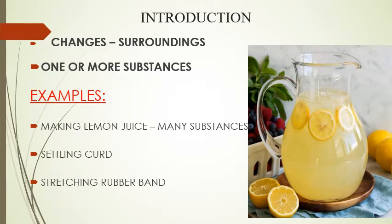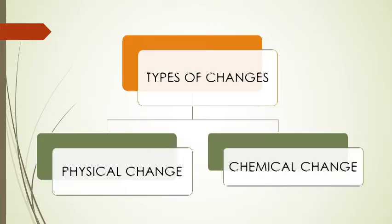Every day you come across many changes in your surroundings. These changes may involve one or more substances. For example, your mother asks you to dissolve sugar in water to make lemon juice. Making lemon juice is a change. Similarly, setting curd from milk, cooking of food, digestion of food, photosynthesis, rusting of iron, and stretching a rubber band are all changes occurring around you. Broadly, all these changes are classified as physical and chemical changes.